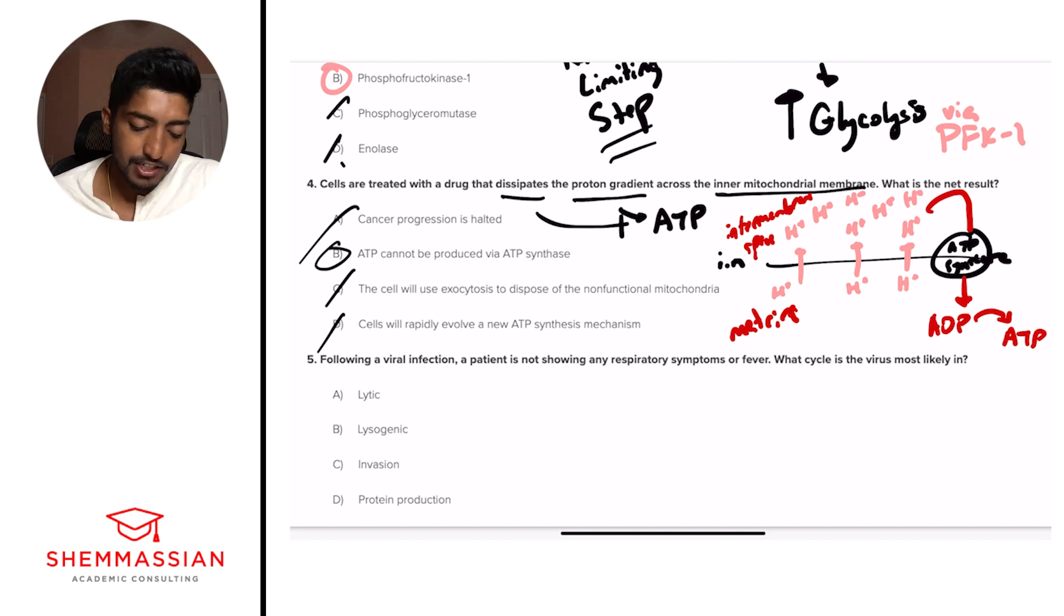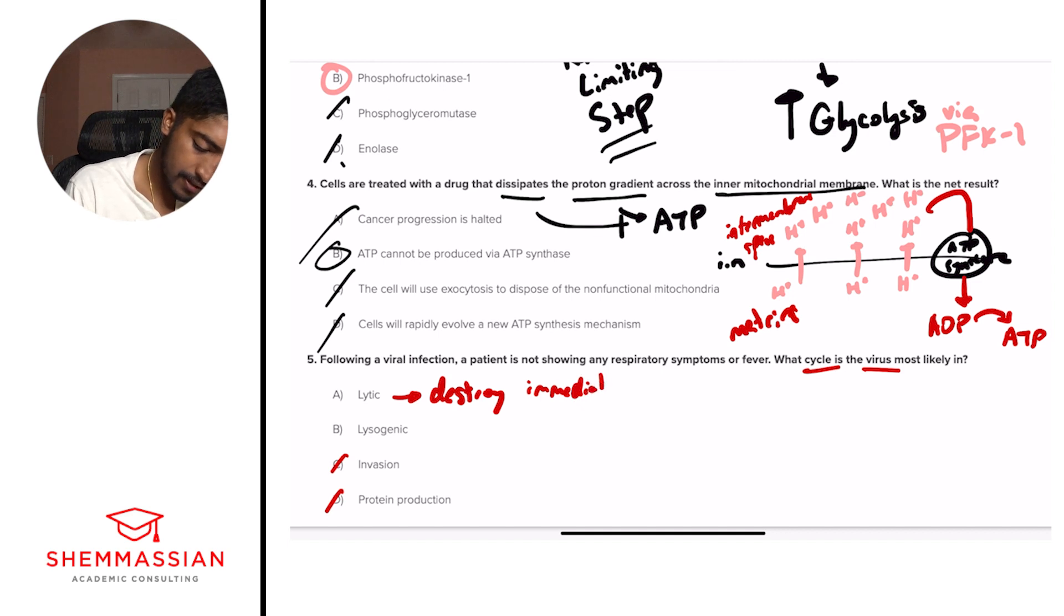Five. Following a viral infection, a patient has not shown any respiratory symptoms or fever. What cycle is the virus most likely in? Is it A, lytic, B, lysogenic, C, invasion, or D, protein production? All right. Right away, we should note that C and D are not types of viral cycles that we've heard of. The two main ones we've heard of are the lytic and the lysogenic cycle. And so the two things I want you to remember is, lytic is more of the destroy, immediately, type of thing. And lysogenic is playing the long game.